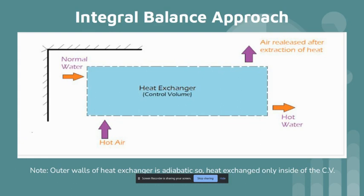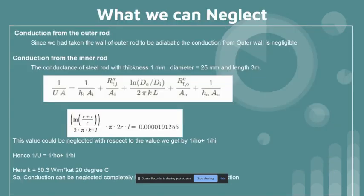Now coming to the approach which we are using to solve this problem statement. We are using integral balance approach, and the outer walls of the heat exchanger is assumed to be adiabatic. So no heat exchange is taking place through the outer cylinder, and only the heat exchange is between inside the control volume. Now we have to consider which modes of heat transfer we should consider in this problem statement. For the conduction from the outer rod, as we have assumed it to be adiabatic wall, the conduction from the outer wall is negligible.